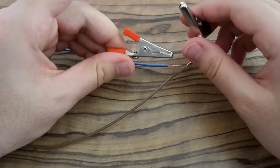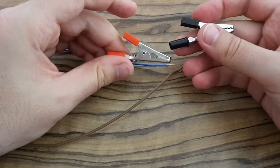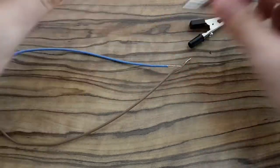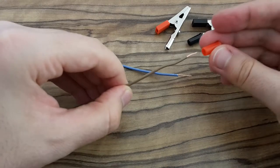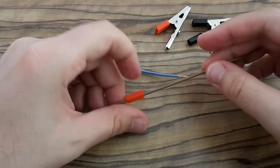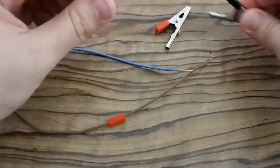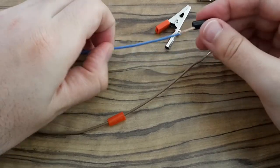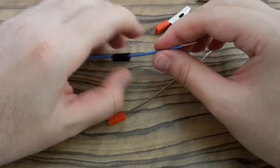I've already connected crocodile clips to wires before, but I soldered them. This time I'm going to try another technique which I found on the internet and it's a crimping method.